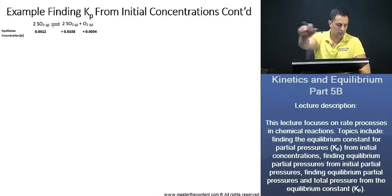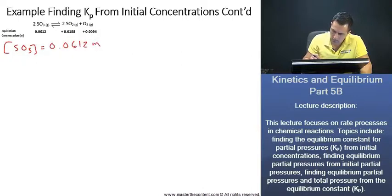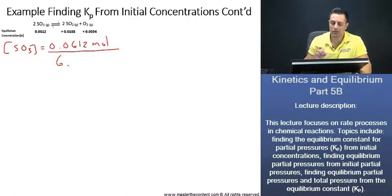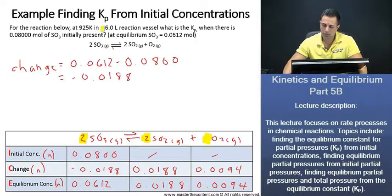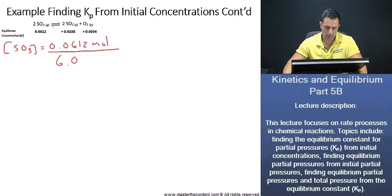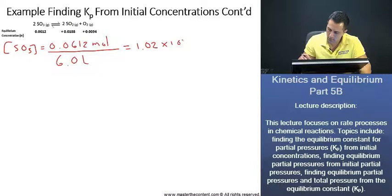We'll begin with sulfur trioxide, which is 0.0612 moles. Remember we said we had 6 liters. We were told in a 6-liter reaction vessel, that's where I'm getting this 6 from. Once you do the math on that, you're going to end up with a value of 1.02 times 10 to the power of negative 2 molarity.